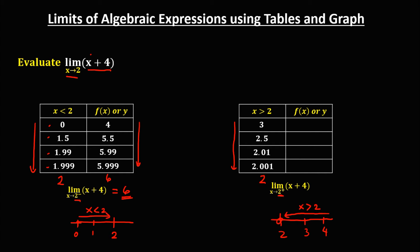For the right-side limit: if x = 3, then 3 + 4 = 7. Then 2.5 + 4 = 6.5. Then 2.01 + 4 = 6.01, and 2.001 + 4 = 6.001. Observe that the values for y approach positive 6, so this right-side limit is also equal to positive 6. Since the left-side limit equals the right-side limit, the limit of the function as x approaches positive 2 is equal to positive 6.